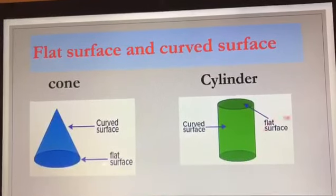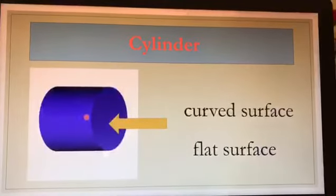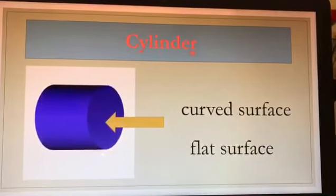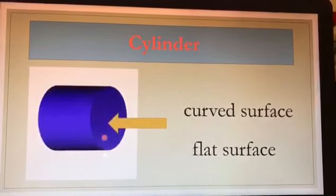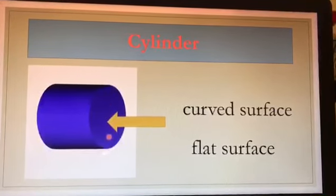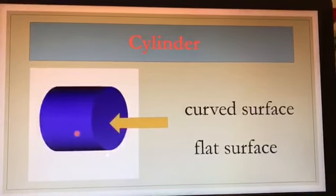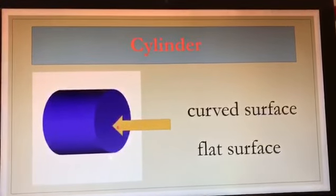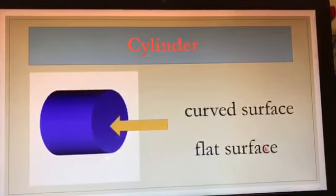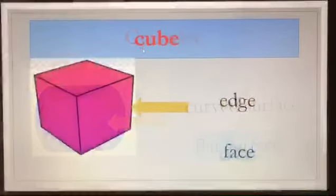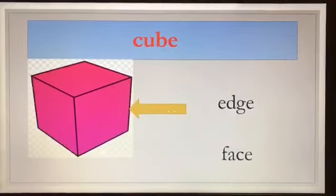And this part of the cylinder is called the flat surface. Children, what shape is this? This shape is called a cylinder. Look at the arrow — it is pointing towards the flat surface. Yes, this is called a flat surface, and this is called a curved surface. Since the arrow is pointing towards the flat surface, we will circle the flat surface.